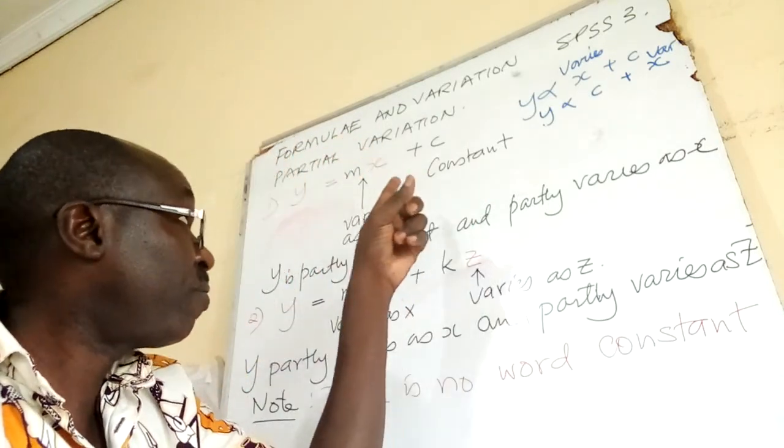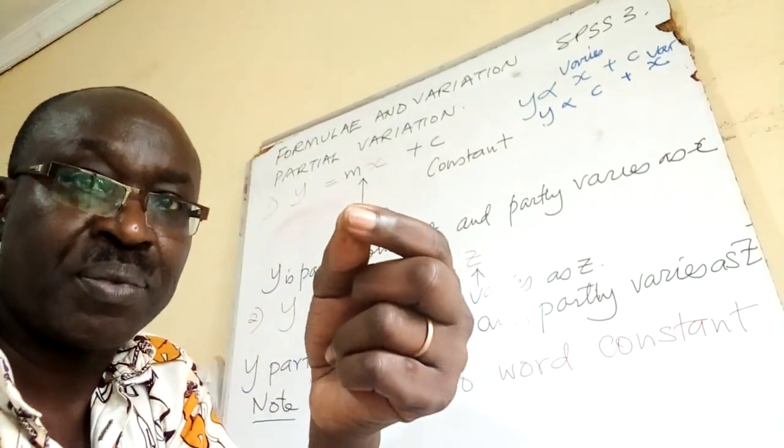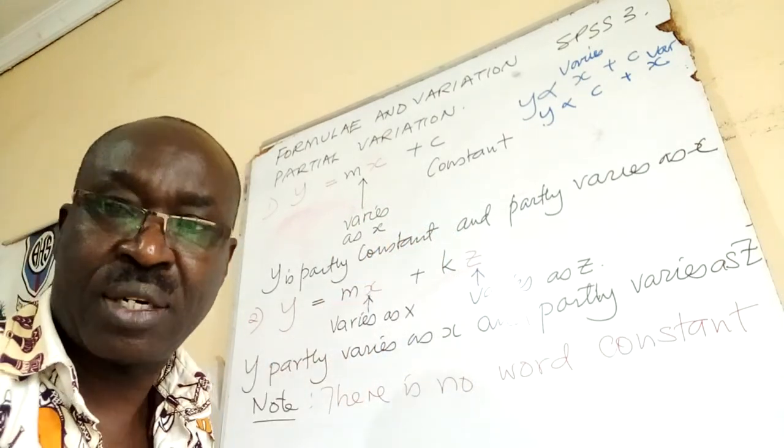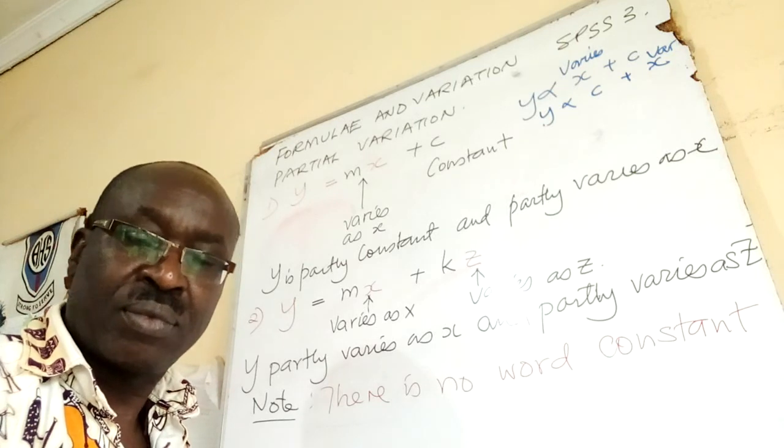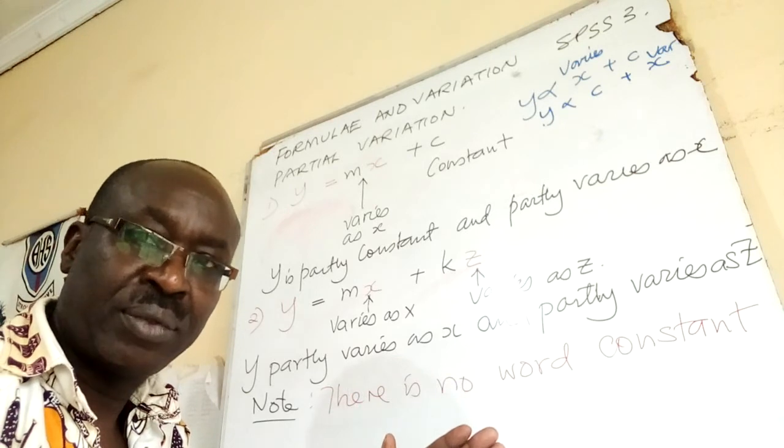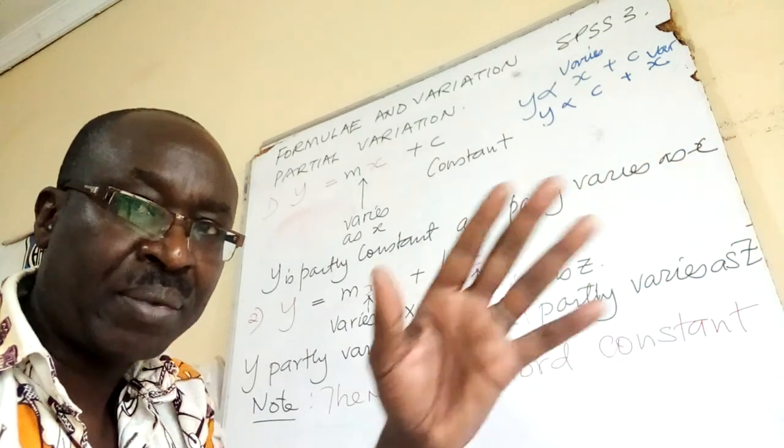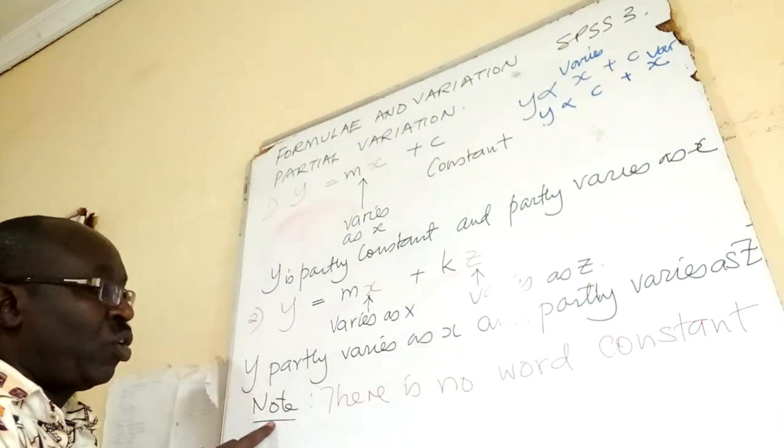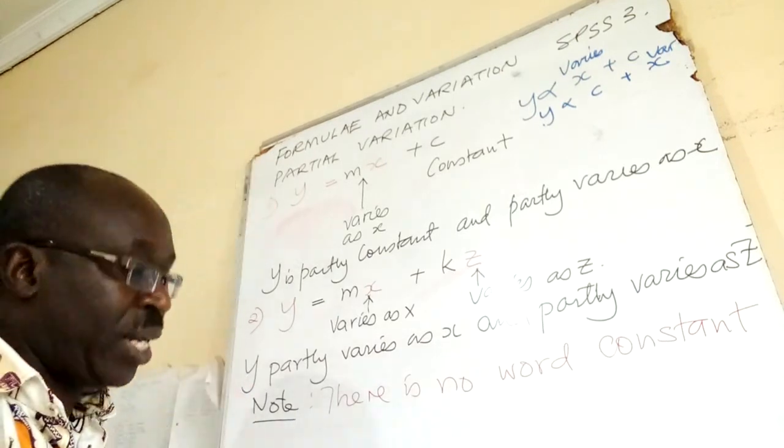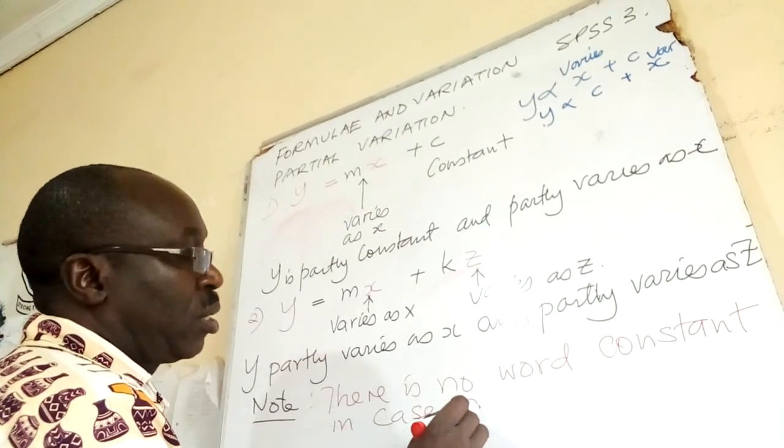Two signs, first born, with the key thing: constant. Secondly, there is no word constant. Note, there is no word constant in case two.